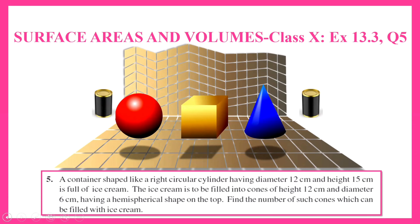Hello everyone. We are doing the fifth question of exercise 13.3 from the chapter of surface areas and volumes for class 10. A container shaped like a right circular cylinder having diameter 12 centimeters and height 15 centimeters is full of ice cream. The ice cream is to be filled into cones of height 12 centimeters and diameter 6 centimeters having a hemispherical shape on the top. Find the number of such cones which can be filled with the ice cream.